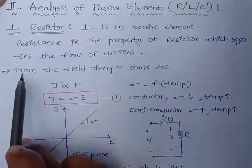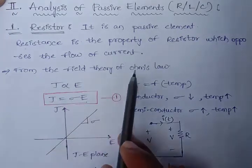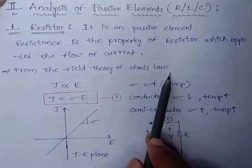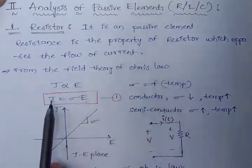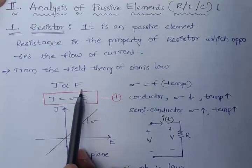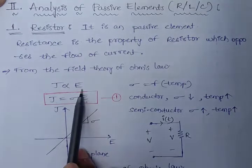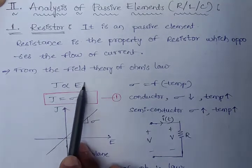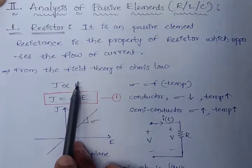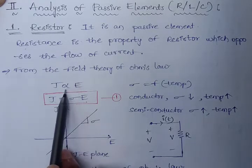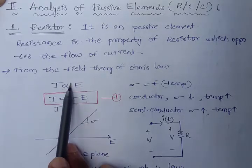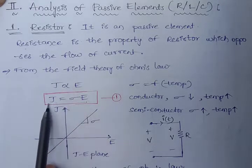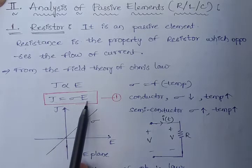From the field theory of Ohm's law, we can write J is directly proportional to E — that means current density is directly proportional to electric field. If we replace this proportionality constant, we will get J is equal to sigma E.